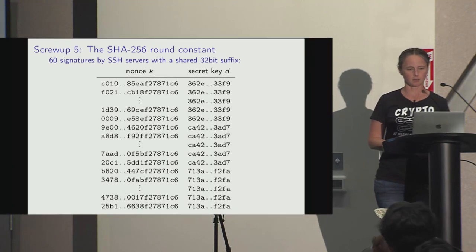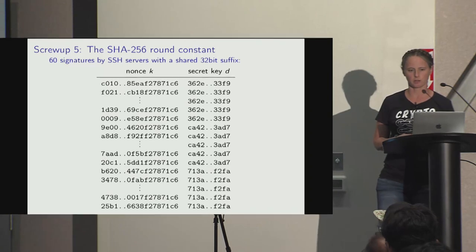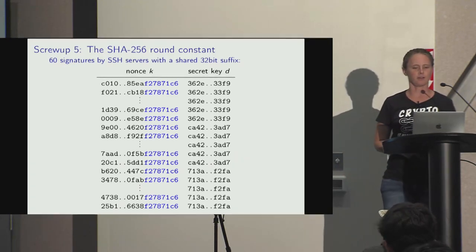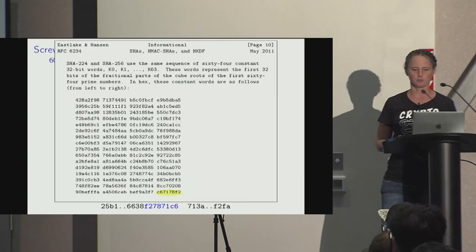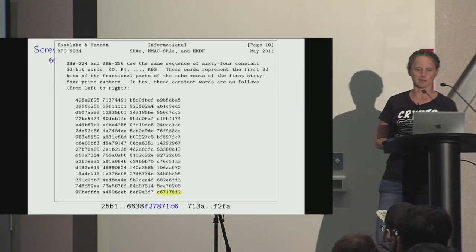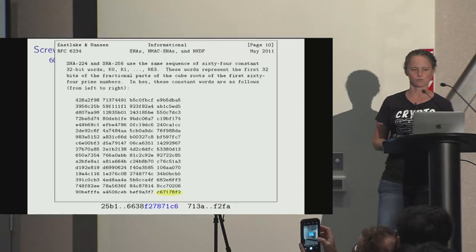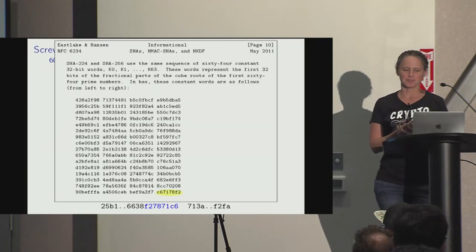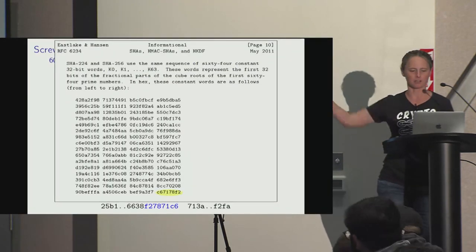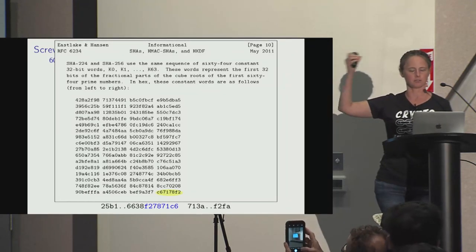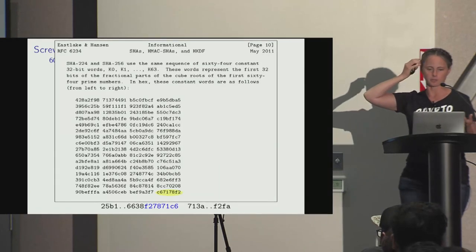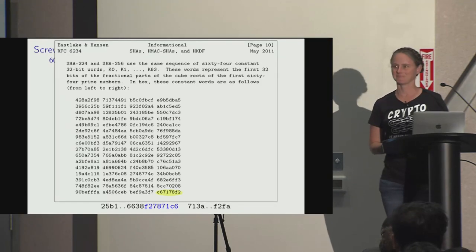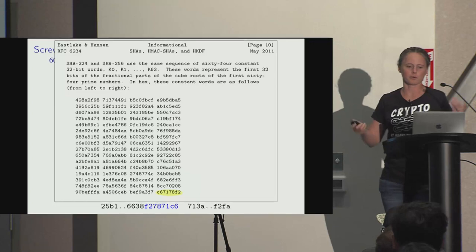We found signatures from SSH servers with a shared 32-bit suffix. Googling this value revealed it to be one of the round constants for SHA-2 with changed byte order. Someone was apparently trying to use SHA-2 to generate their nonces — a good procedure — but somehow screwed up the SHA-2 implementation so that a fixed value appeared in the least significant bits. We have no idea what implementation this is.